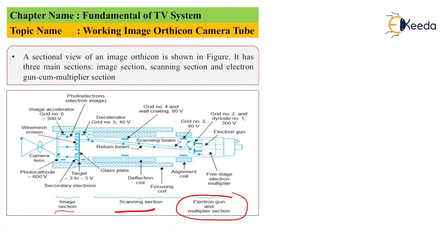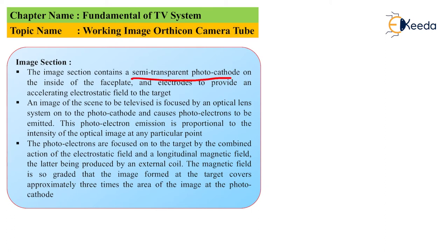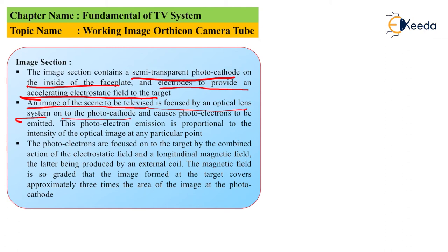In the image section, there is a semi-transparent photocathode present inside the faceplate. The electrons are provided an accelerating electrostatic field to the target. The image which is to be televised is focused onto the photocathode by using an optical lens system. When the image is focused onto the photocathode, photoelectrons are emitted, and this photoelectron emission is proportional to the intensity of the optical image at that particular instant of time.